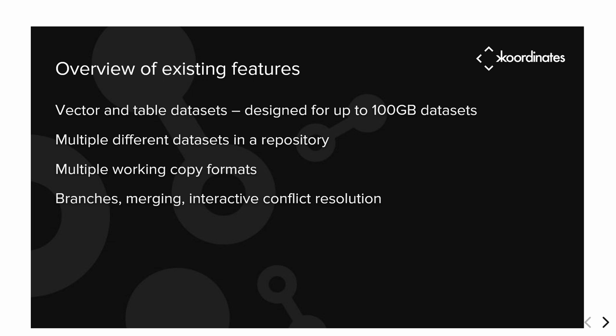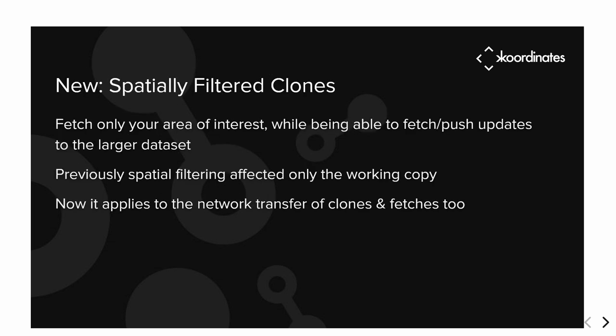We have spatially filtered clones. Last year you could cut your national-size dataset locally — say you had Italian data but were only interested in the center of Florence — and not pull all that into QGIS every time. Now we can do that over the network as well, so you don't even download the rest of Italy. Importantly, it's still part of the larger dataset — not a copy, not diverged. If you do a fetch, you get updates relating to Florence but not Venice, while still being part of the same larger repository.